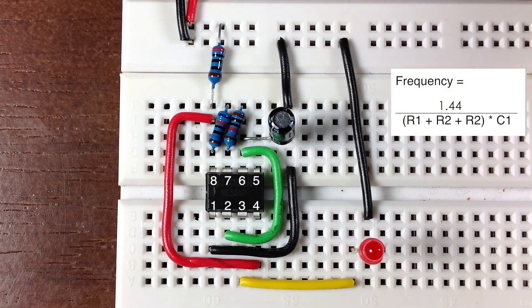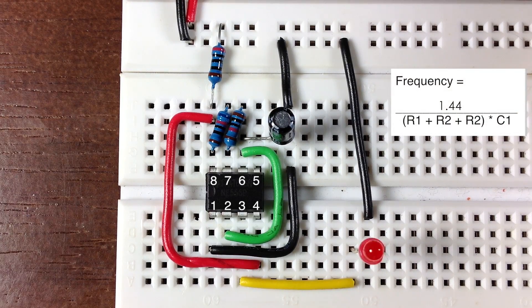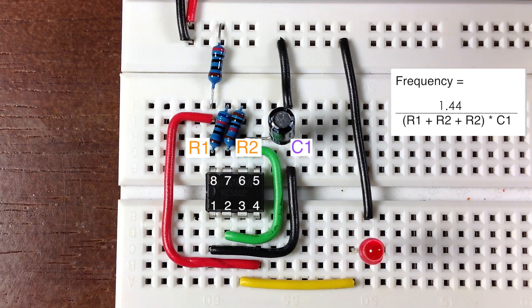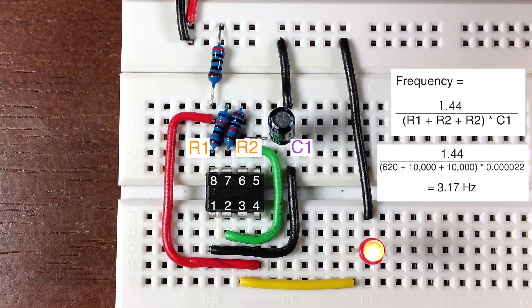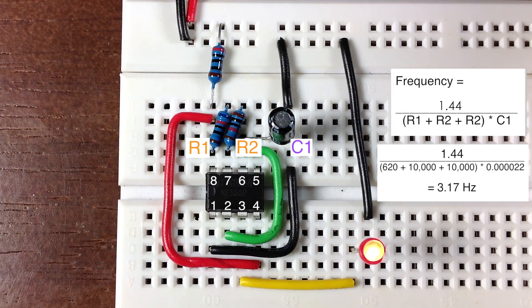Here is the equation to get the desired output frequency depending on what combination of resistors and capacitor you use. I intentionally chose a combination that would produce a low enough frequency that we could see the light blink.